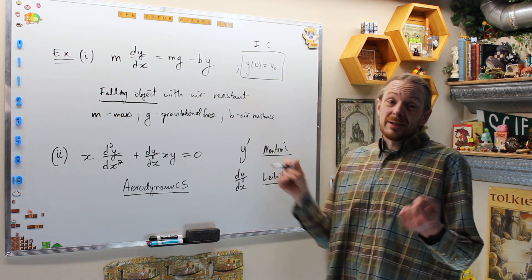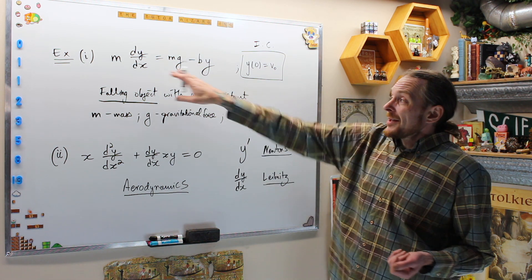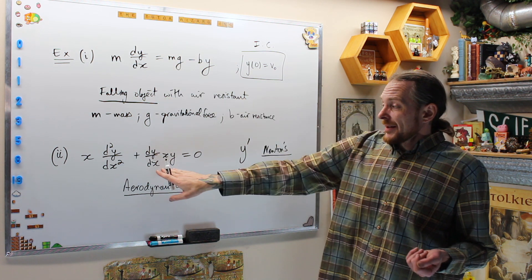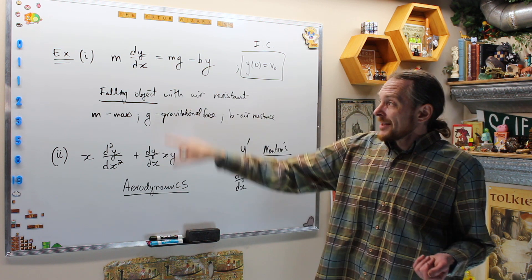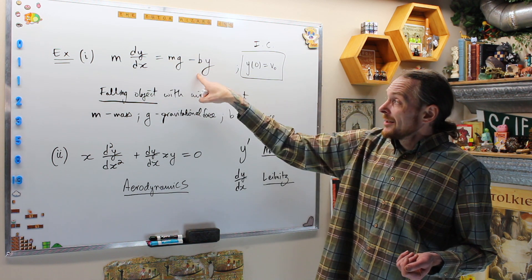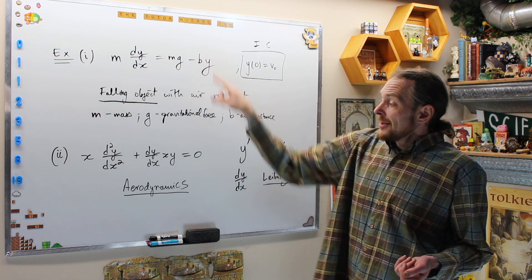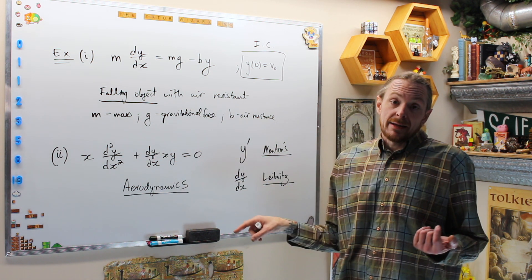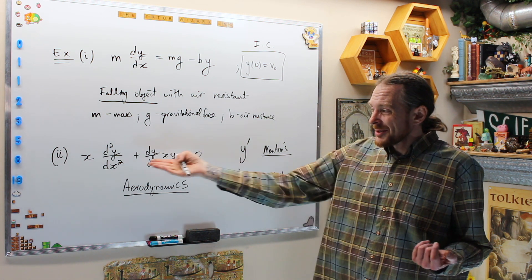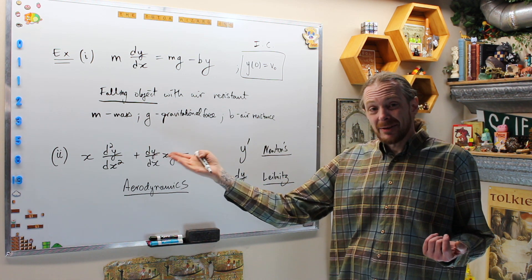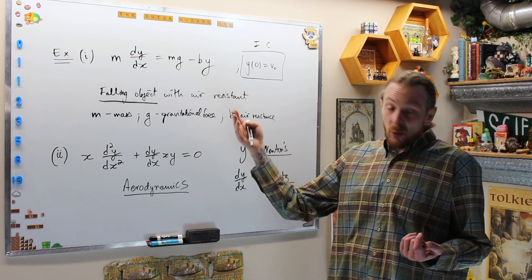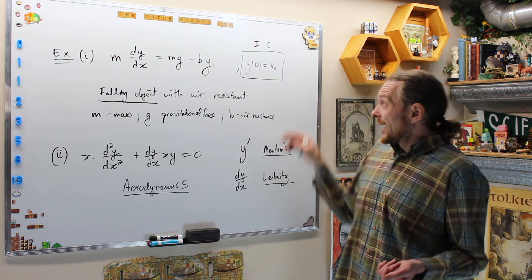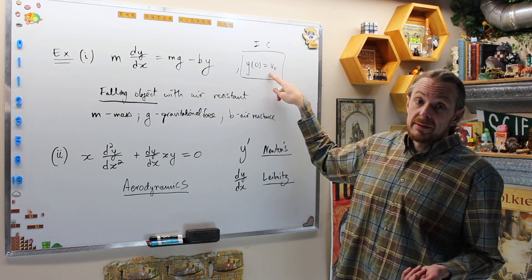Possibly this one we won't talk about in this course because it's not constant coefficient. It is second order, and that's what we're going to talk about now. One difference between this one and this one is this one has the first derivative only and Y, and this one has the second derivative and the first derivative and Y. The largest or highest derivative appearing is going to be the order of the differential equation, and then these are initial conditions.